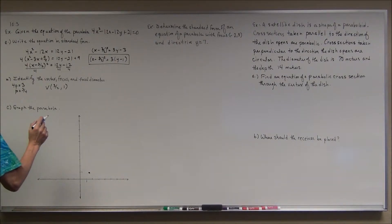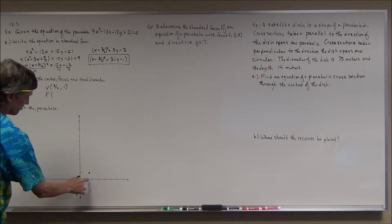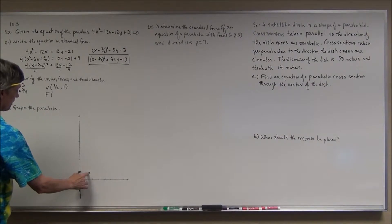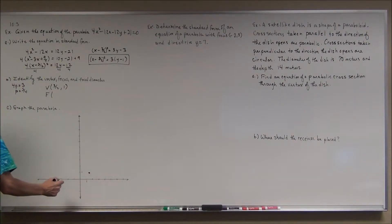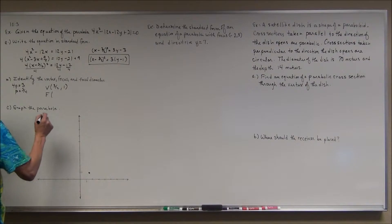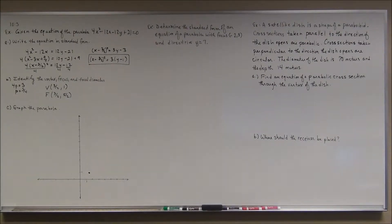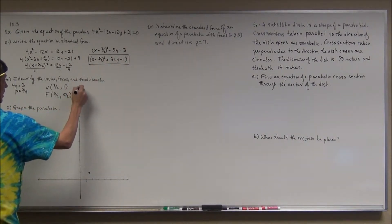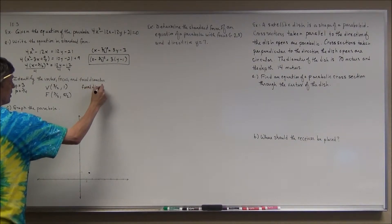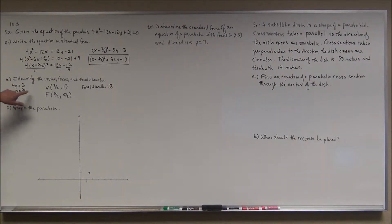I'll go ahead and plot the vertex at (three-halves, 1). Since the parabola opens upward, the focus is p units above the vertex. Moving three-halves over and up one, then another three-halves up gives a focus at (three-halves, five-halves). The focal diameter is the absolute value of 4p, which equals 3.